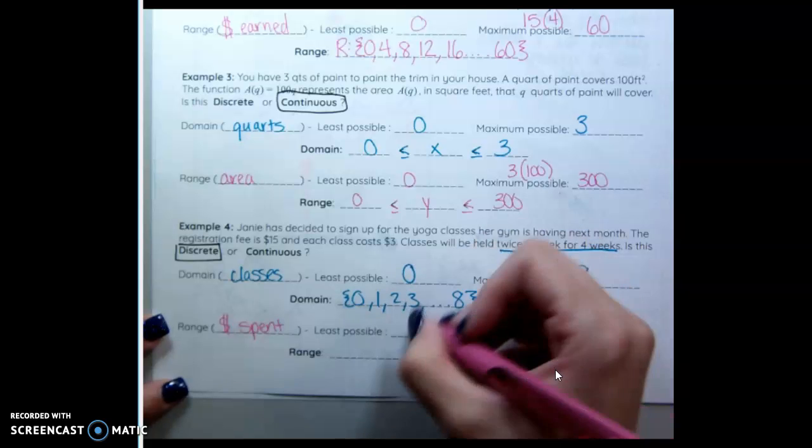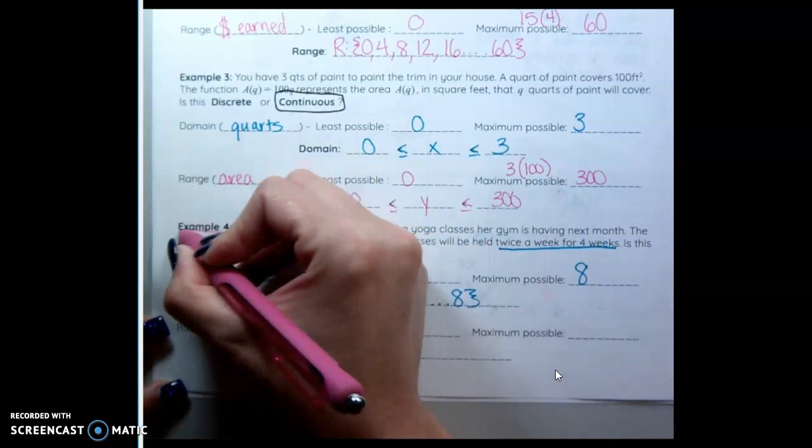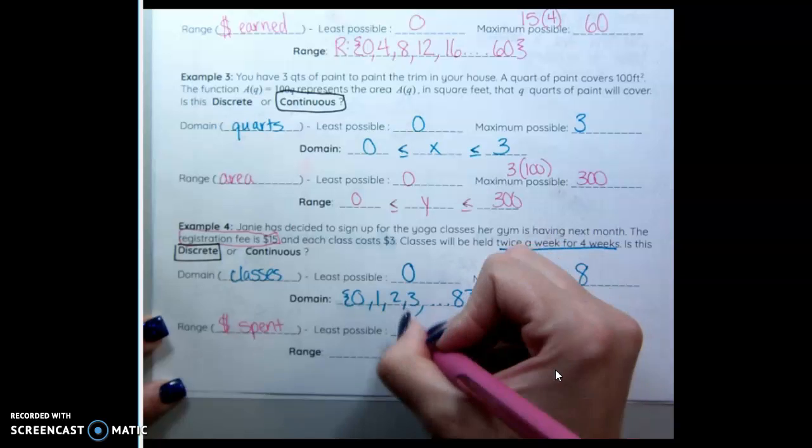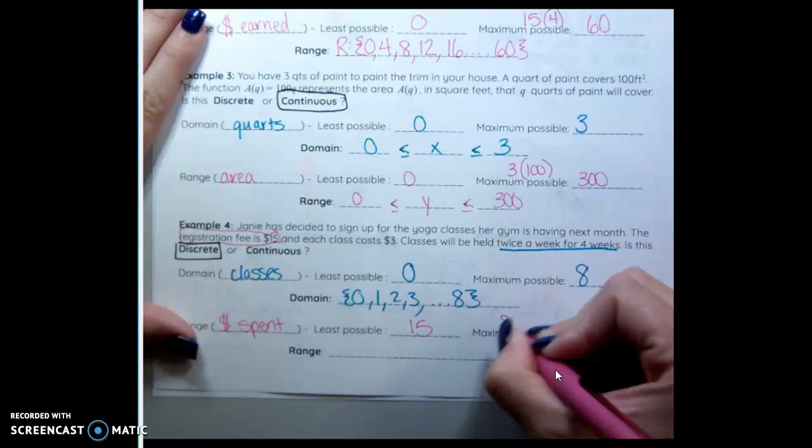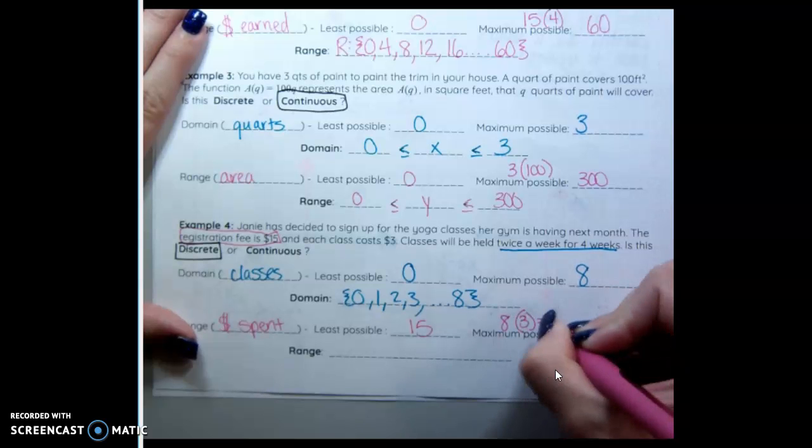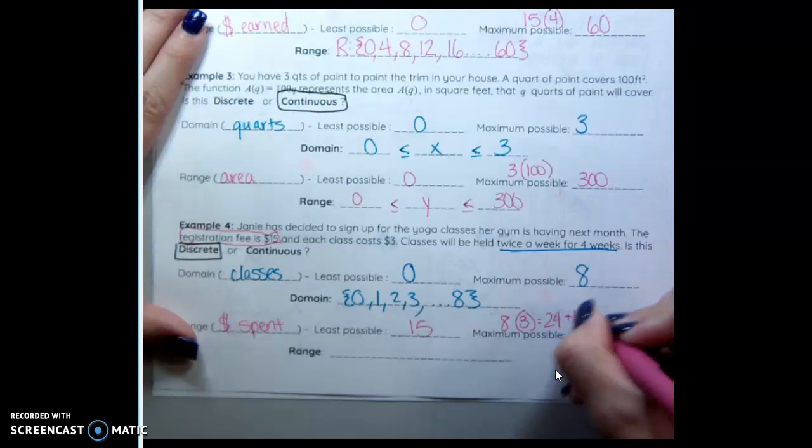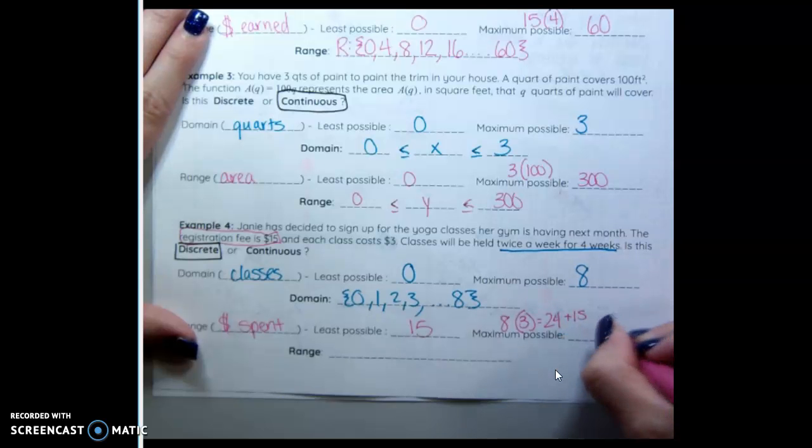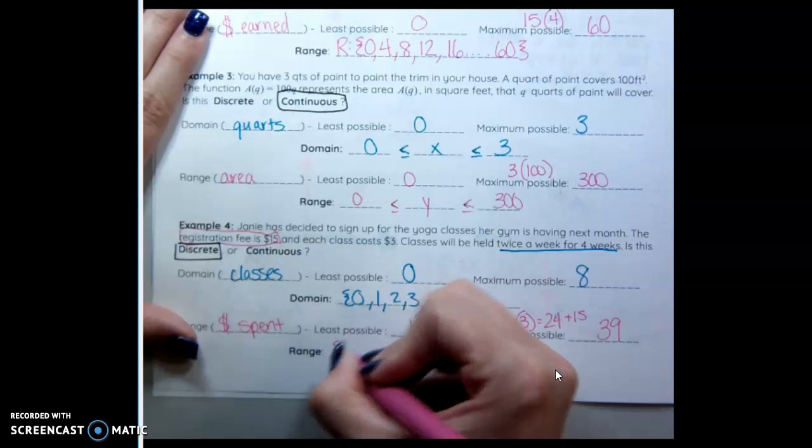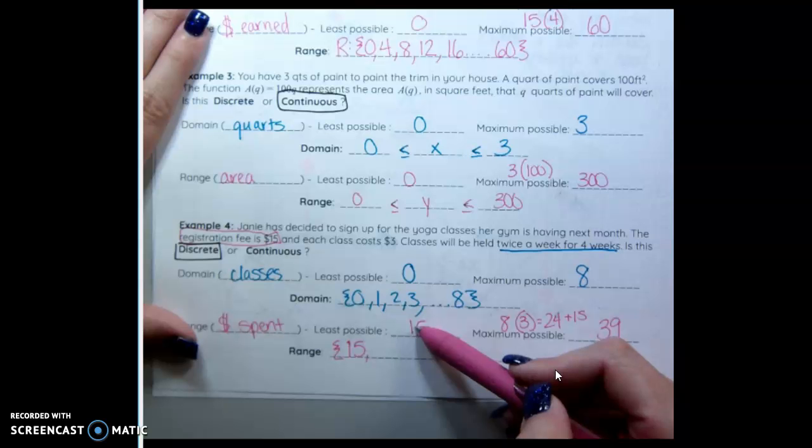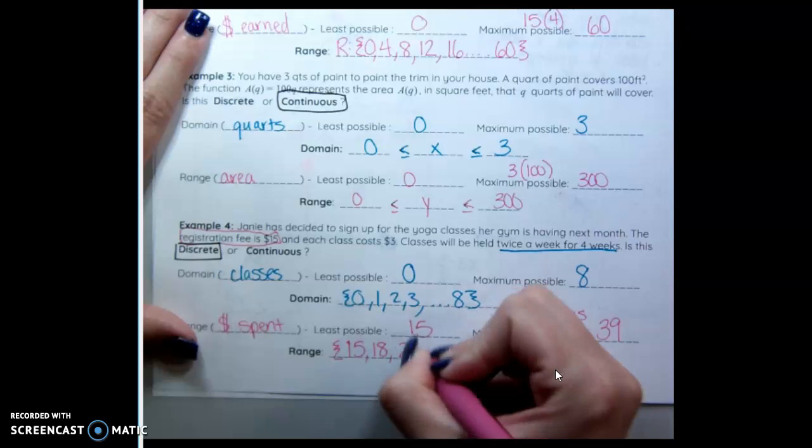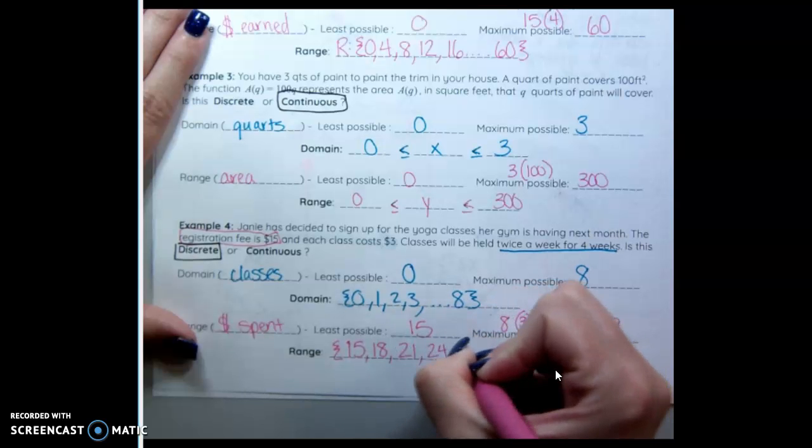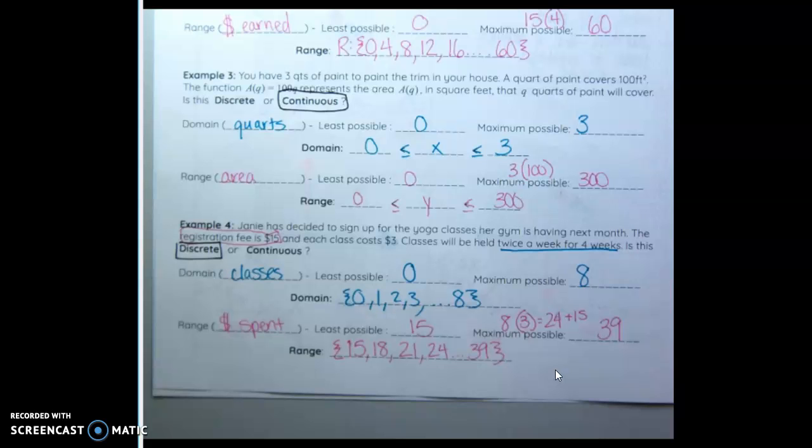Money spent. If I don't go to any classes, I've still spent $15. Because that's how much it costs to join the gym. Now if we go to all eight classes and each one is $3, that's $24. But I have to pay $15 to join. So the total I've spent is $39. So my range starts at $15. Because even if I go to zero classes, I've still spent $15. After that, it goes up by three. $18, $21, $24, all the way up to $39.